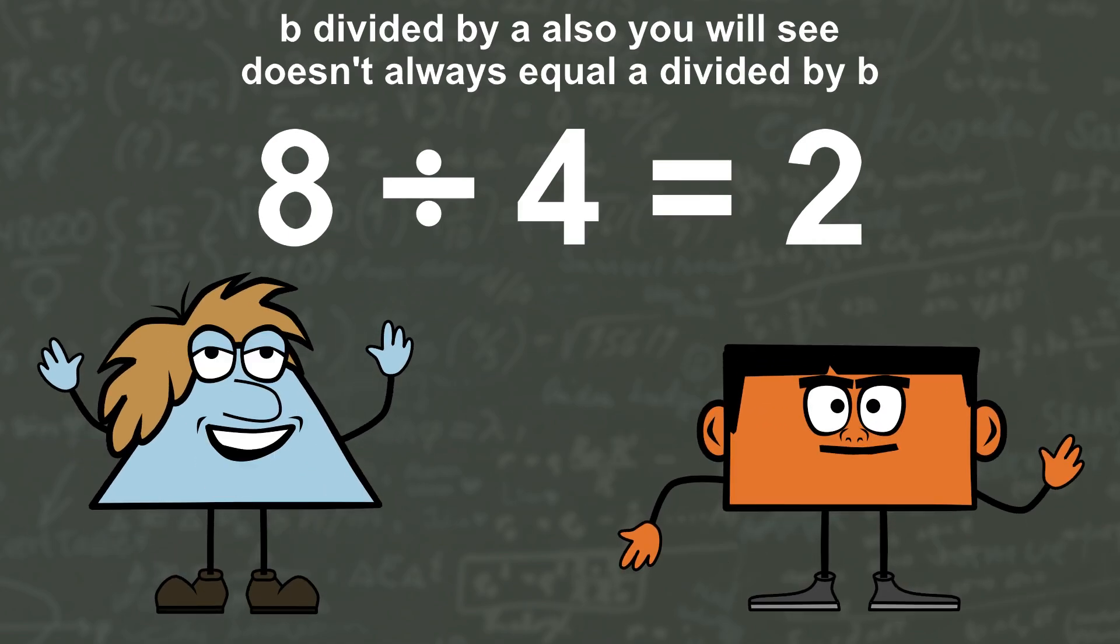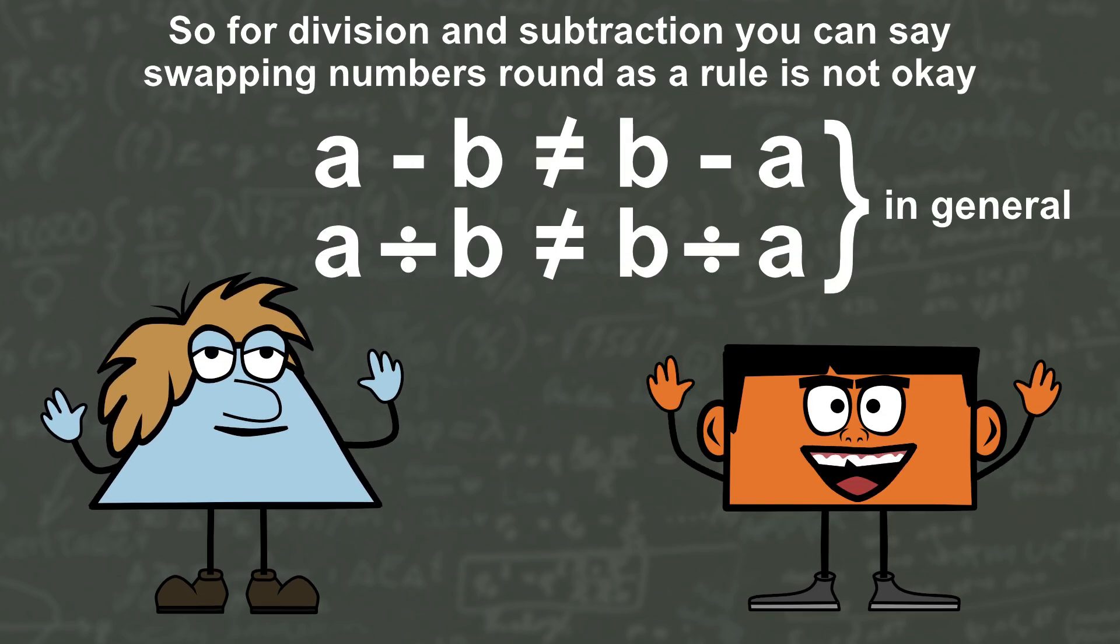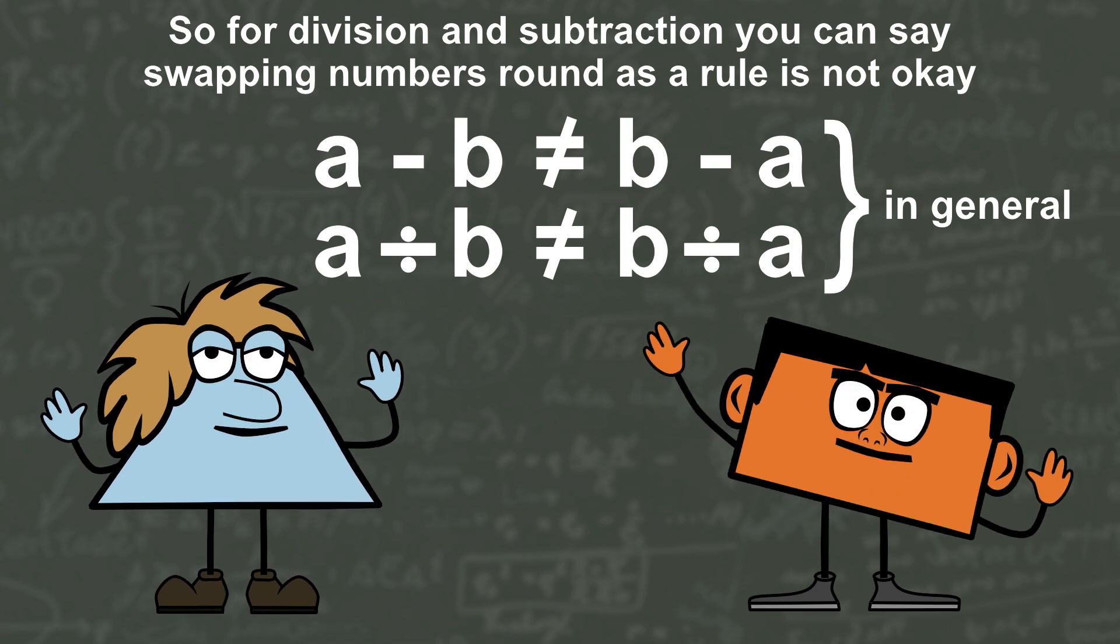b divided by a also you will see doesn't always equal a divided by b. So for division and subtraction you can say, swapping numbers round as a rule is not okay.